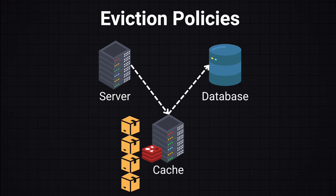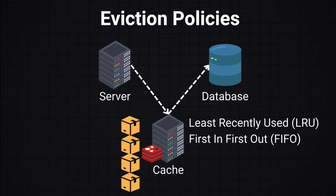But what happens if the cache is full and we need to free up some space? For that we have eviction policies, which are rules that determine which items to remove from the cache when it's full. Common policies are: remove the least recently used (LRU), first in first out (FIFO) where we remove the ones that were added first, or removing the least frequently used ones.